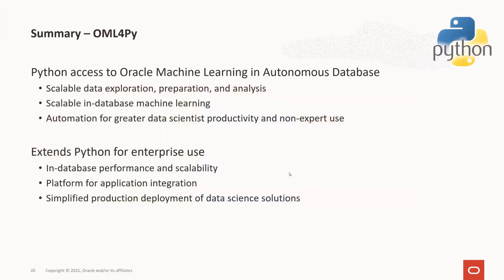In summary, Oracle Machine Learning for Python provides Python access to Oracle Machine Learning in Autonomous Database. Python users can explore, prepare, and analyze data, and build, evaluate, and deploy machine learning models. Through integrated automation features, data scientists see greater productivity, and non-expert users have access to powerful in-database machine learning. OML4Py extends Python for enterprise use by leveraging the performance and scalability of Autonomous Database for enterprise-scale datasets, and also by providing a platform for application integration with simplified production deployment of data science solutions.